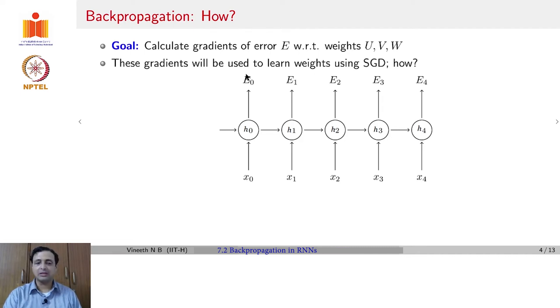If you had a many-to-one setting, you may have an error only at one time step. But in a more general case of an RNN, you could have an error for your output at every time step. You could have an error E_0 at time step t equals 0, similarly E_1 at time step t equals 1, and so on and so forth. In this case, till E_4. The question now is, how do you compute the gradient of the error with respect to u, v and w? How do you do this?